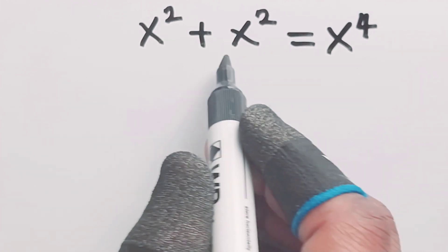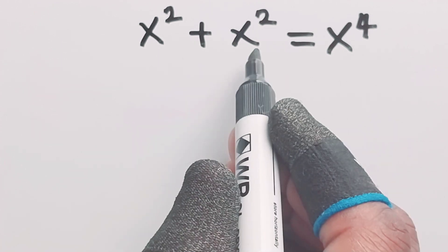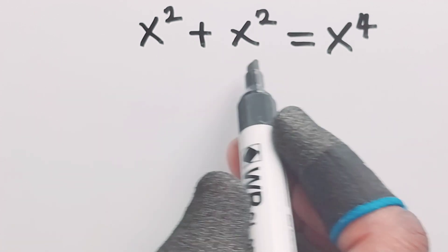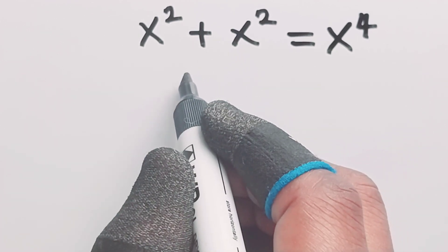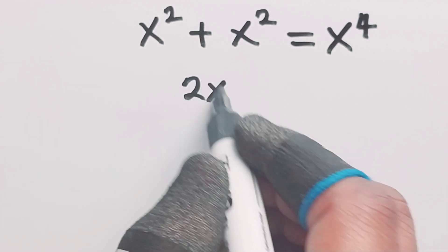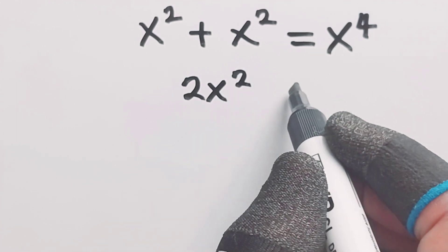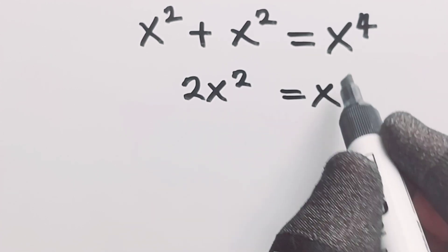Looking at the left hand side we can see x squared, x squared. I can decide to factorize or I can simply just add this together and that gives me 2x squared is equal to x raised to power 4.